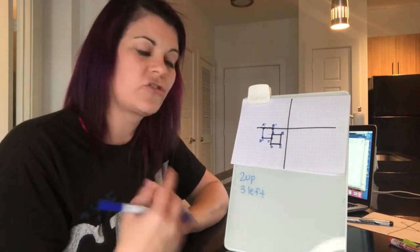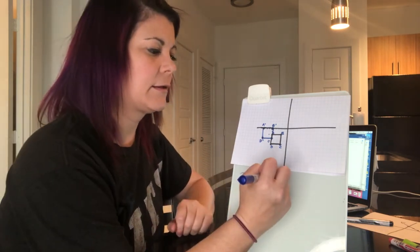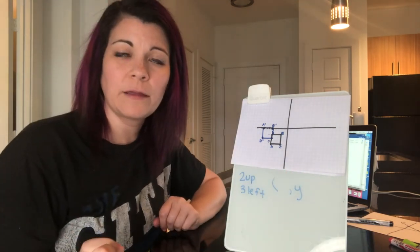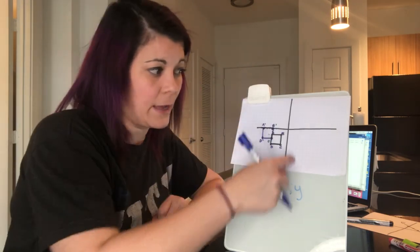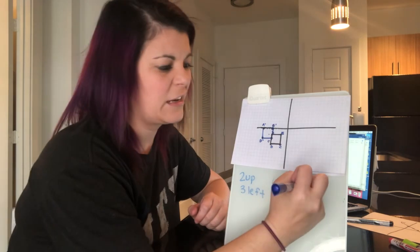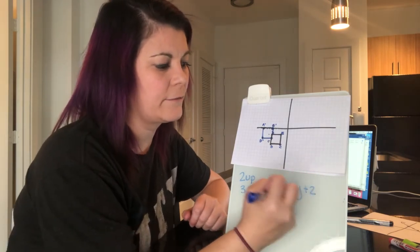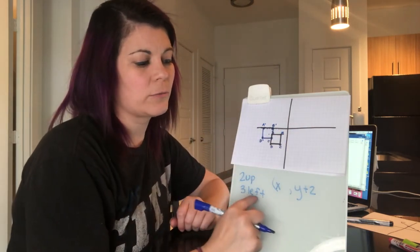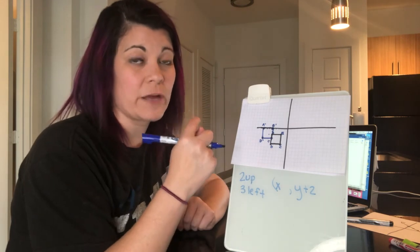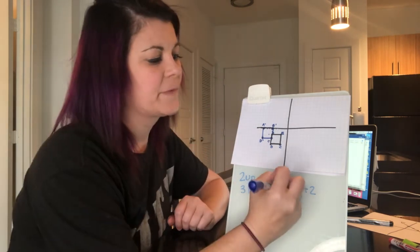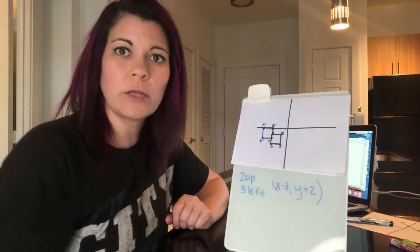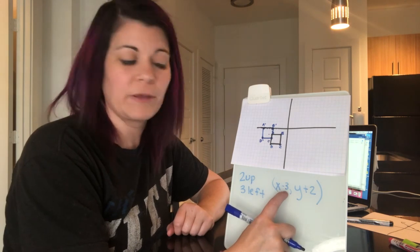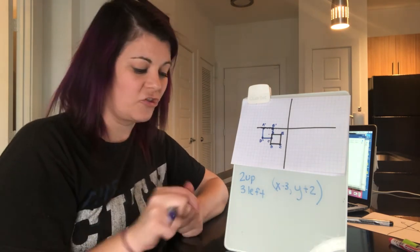We have something called the translation rule. Two up represents what happened to the y-value, because the y-axis tells us up or down. Two up means we added two — positive. For x, left or right: we moved three left, and left means subtraction. So the translation rule is (x − 3, y + 2), meaning every x-coordinate is subtracted by three and every y-coordinate is added by two.